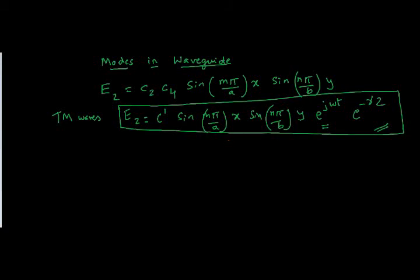Hello all, welcome to the new video of signals and systems. In this video we will study about modes in waveguide. In the previous video we discussed in detail about the derivation of waveguide equations, that is the field equations which exist inside the waveguide. There will be magnetic and electric fields which exist in the waveguide. We derived that through Maxwell equations and also we found out the cutoff frequency of the waveguide, which is also derived basically from Maxwell equations.